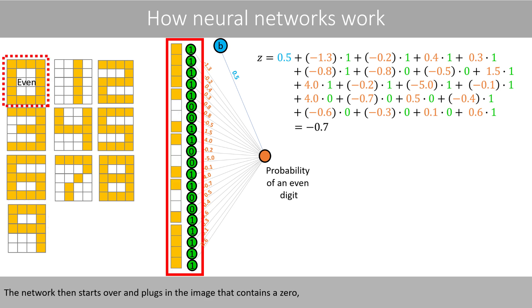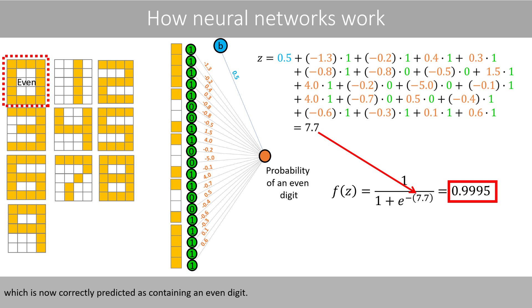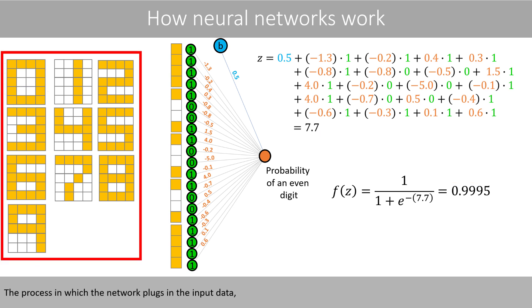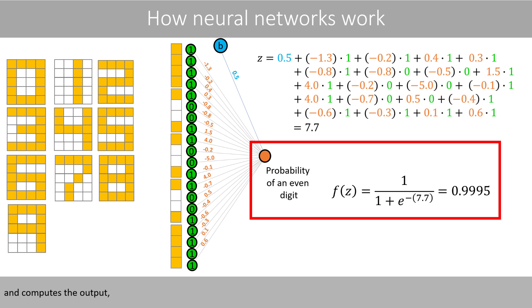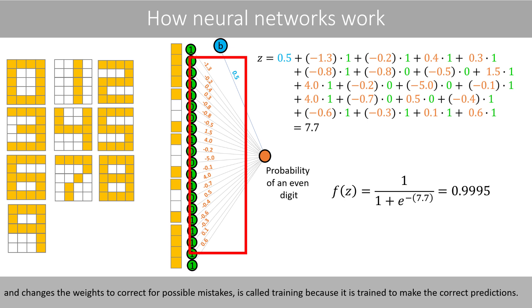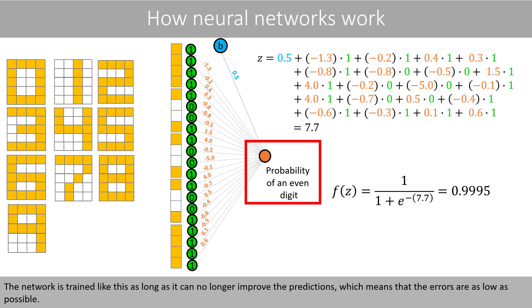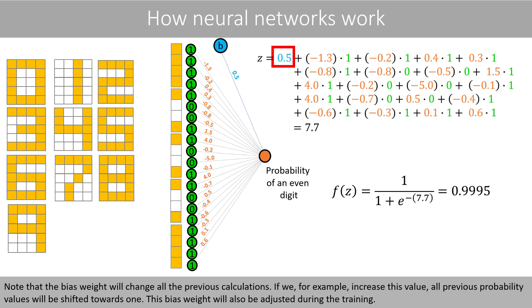The network then starts over and plugs in the image that contains a 0, which is now correctly predicted as containing an even digit. The process in which the network plugs in the input data, computes the output, and changes the weights to correct for possible mistakes is called training, because it is trained to make the correct predictions. The network is trained like this as long as it can no longer improve the predictions, meaning that the errors are as low as possible. Note that the bias weight will change all previous calculations — if you increase this value, all previous probability values will be shifted towards 1, and this bias weight is also adjusted during training.